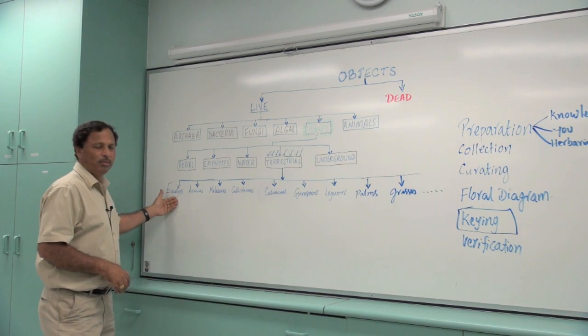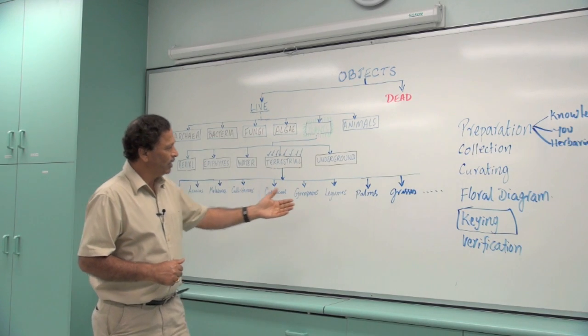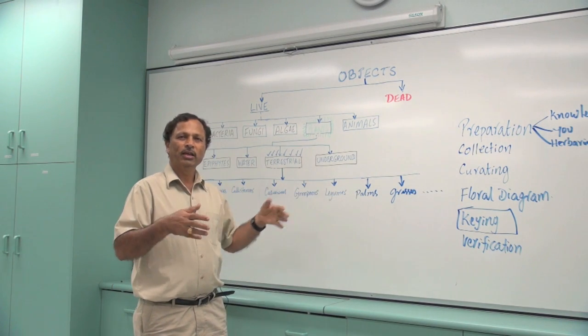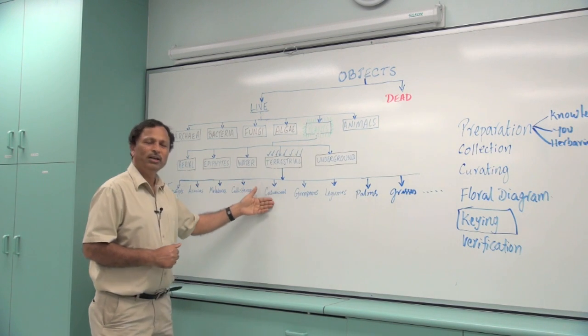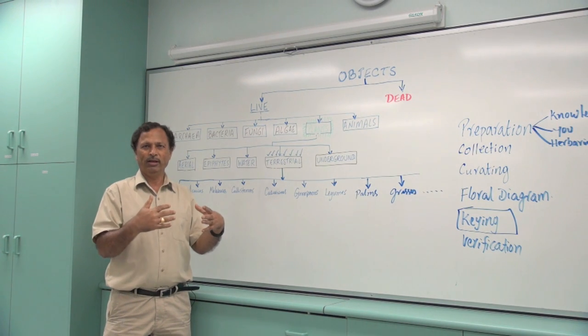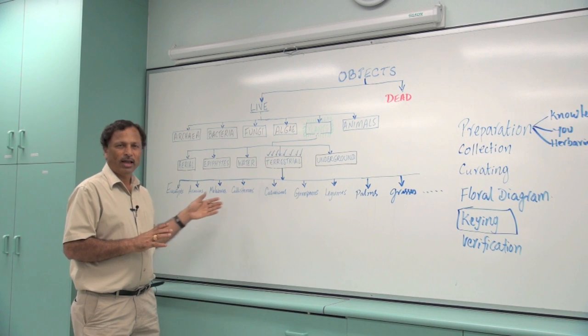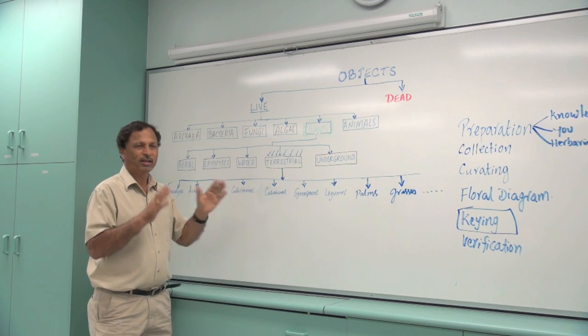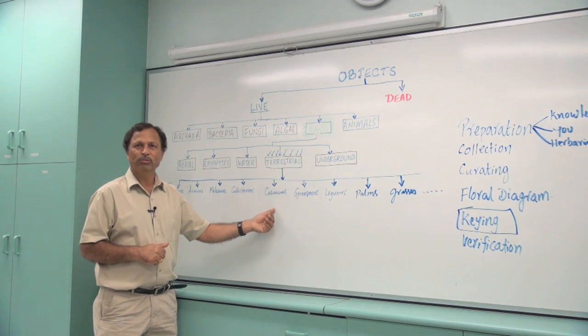For example, in eucalypts you look for gumnuts. If you are looking for legumes, you look for root nodules. And if you are talking about casuarinas, you're looking for the cones or the modified leaves. That's why it is important to have a bit of understanding so that you can apply the right kind of guideline for identifying that group of plants.